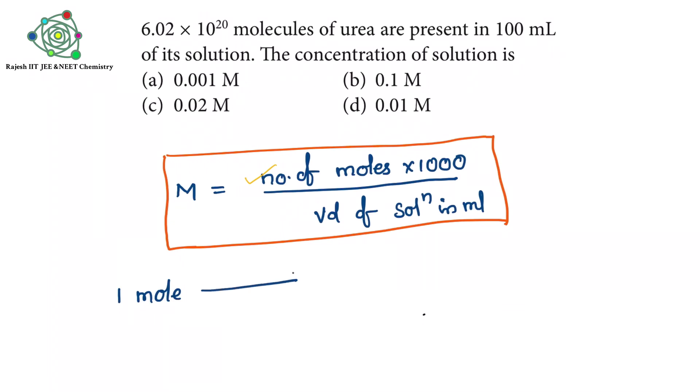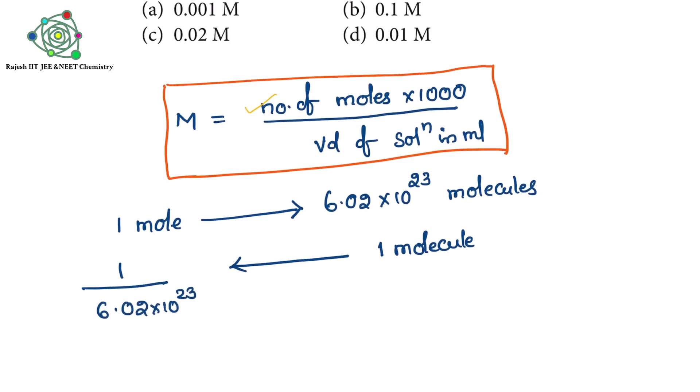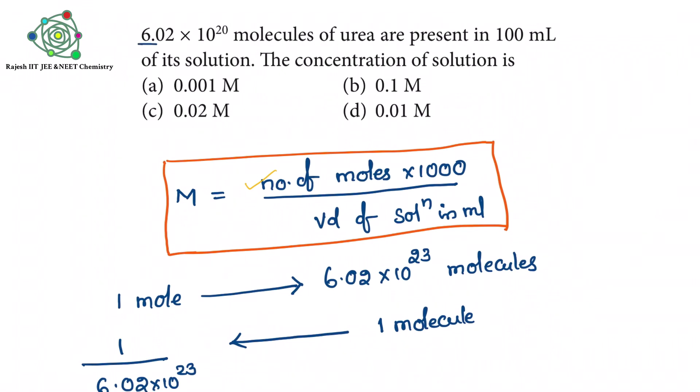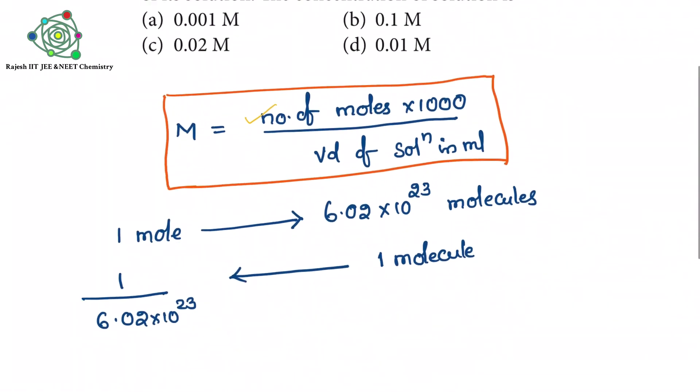If you take one mole of any gas or any substance, it contains 6.022 into 10 to the power 23 molecules. For example, one mole contains this many molecules. One molecule contains how many? 1 by 6.022 into 10 to the power 23.